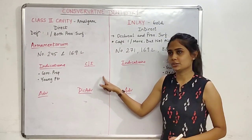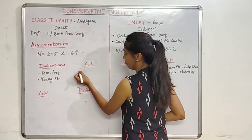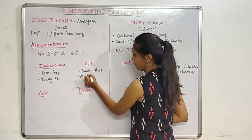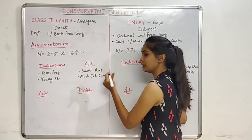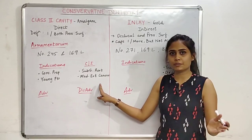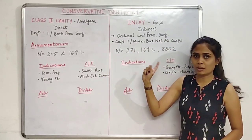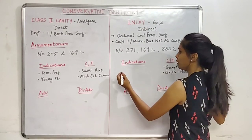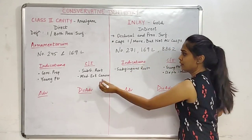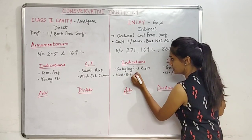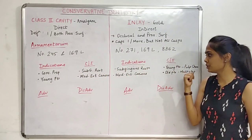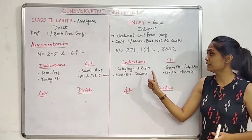The contraindications of the Class 2 cavity for amalgam are: sub-gingival restorations and moderate to extensive carious lesions. Where there is a lot of decay involving multiple surfaces and cusps, we do not prefer the Class 2 amalgam preparation. These contraindications for Class 2 are the indications for inlay gold — whenever you have a sub-gingival restoration or moderate to extensive carious lesions, you use the inlay cavity for gold.